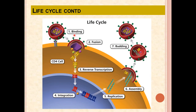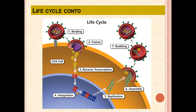The first process is called binding. The HIV virus binds onto the receptor site of the CD4 cell. The second step is fusion — the HIV envelope fuses with the membrane of the CD4 cell. The HIV envelope fuses with the CD4 cell membrane, completing the second step.